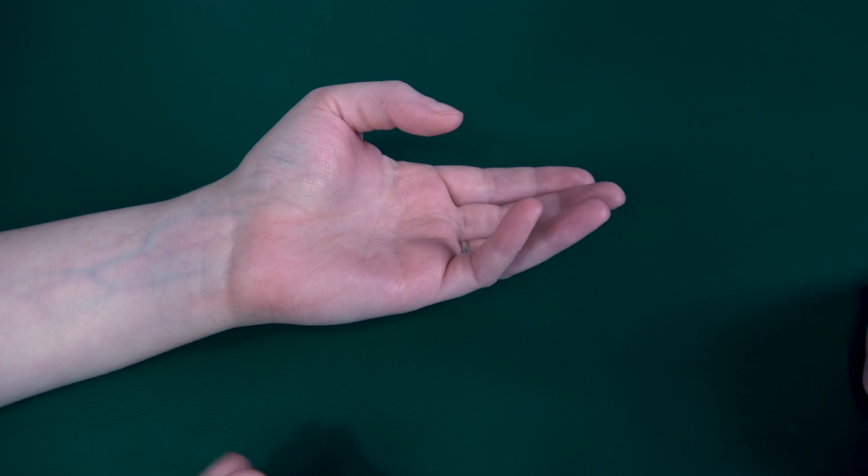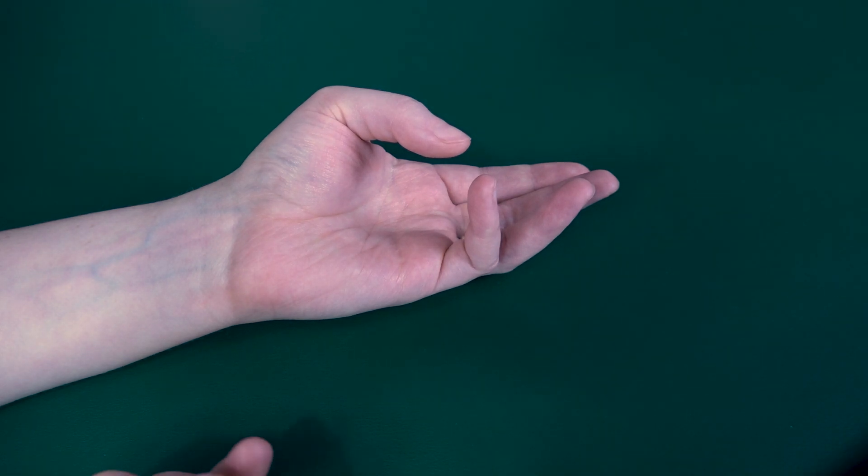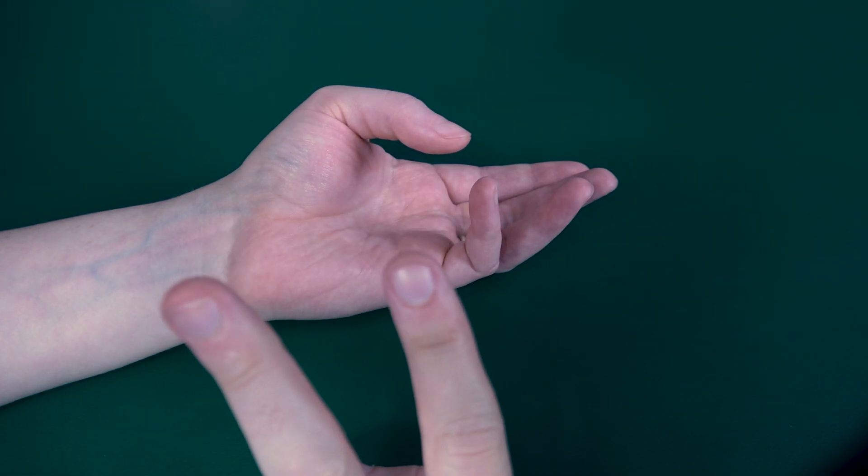Now if she was not able to perform full range of motion—go ahead Rachel, bring that up and pretend like you cannot touch those together. If you cannot touch the pinky and the thumb together, we would grade that as a level two.